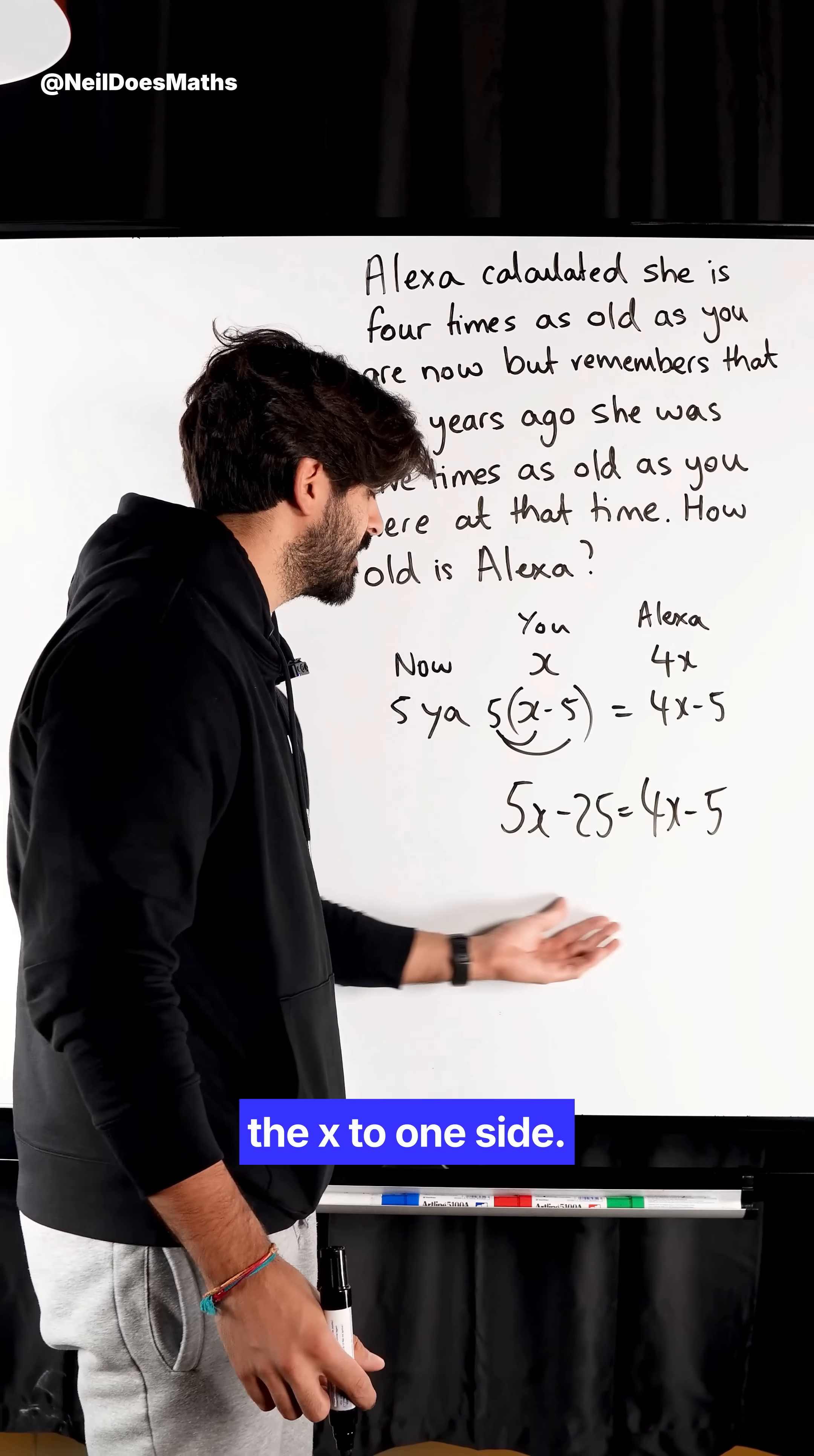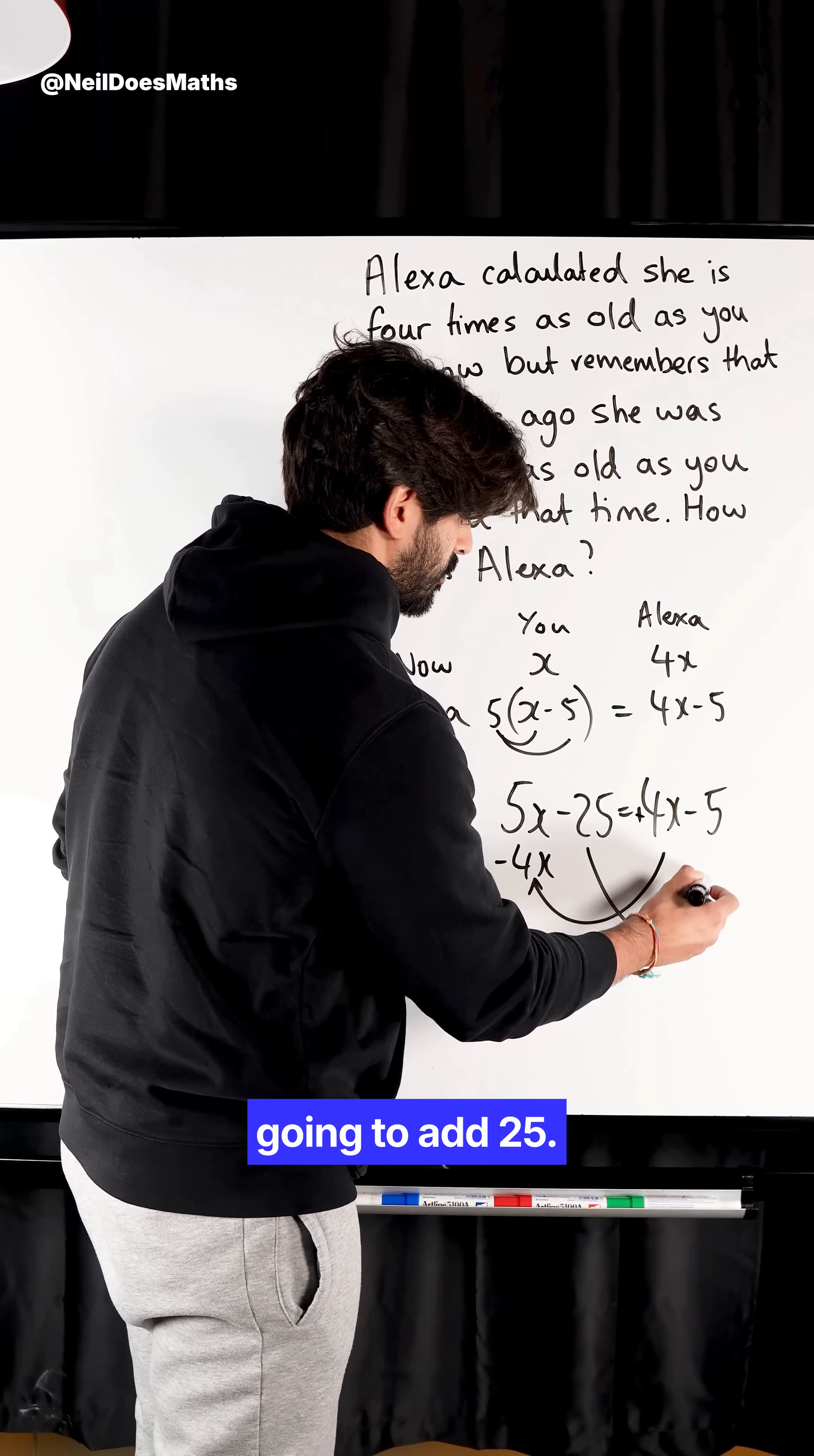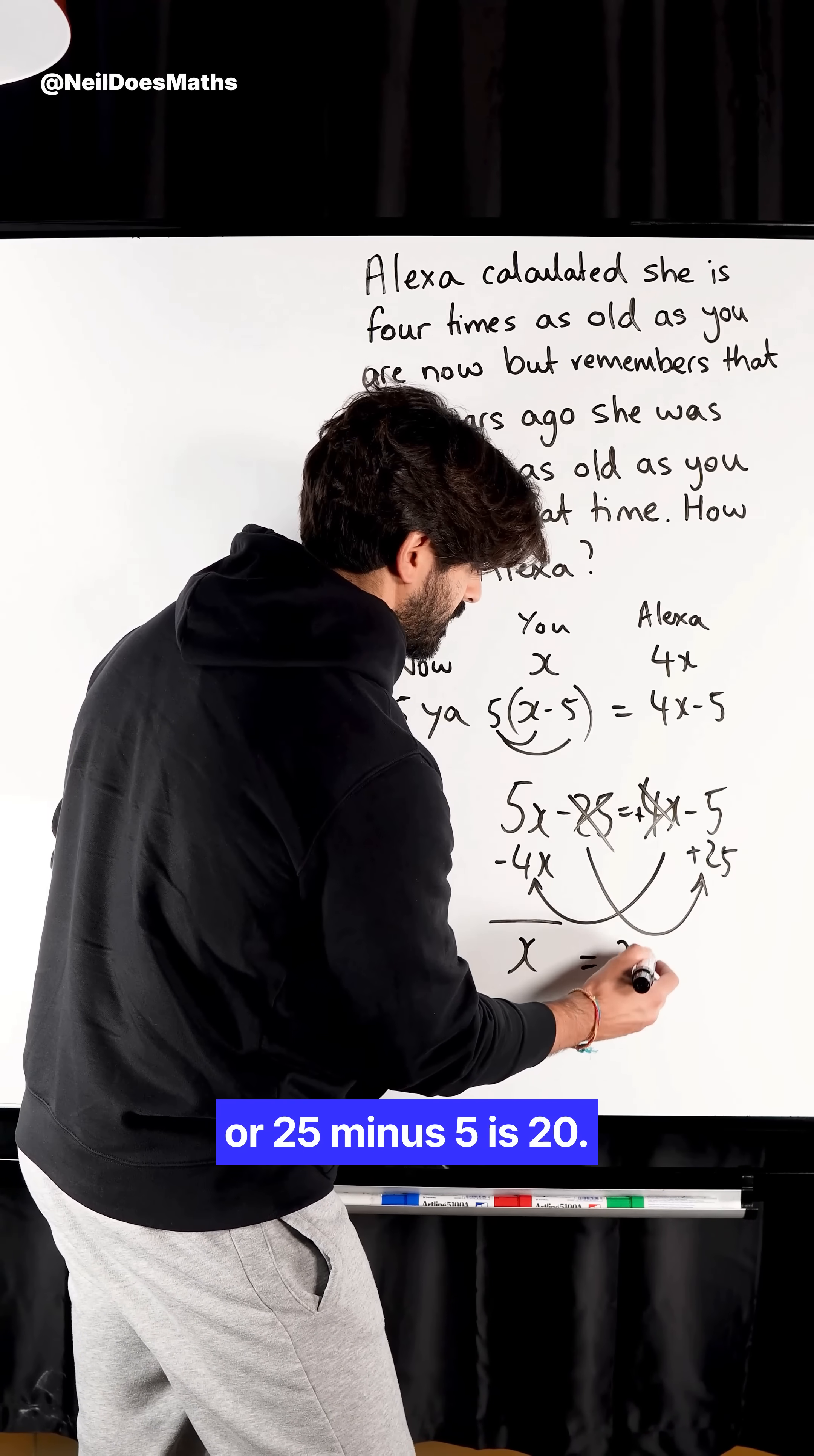Now to solve this, we need to bring all the x's to one side. We're gonna take the smaller one to the larger one. The smaller one is 4x. We're gonna do a Beyonce. We're gonna move it to the left, to the left. We're gonna subtract 4x. And at the same time, we're gonna add 25. Minus 25 over here is a plus 25 over there. So these have been dealt with. 5x minus 4x is just one x is equal to minus 5 plus 25 or 25 minus 5 is 20.